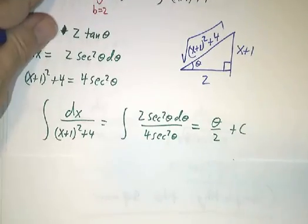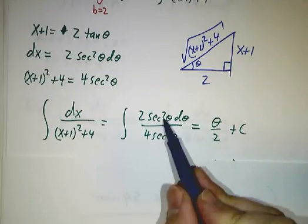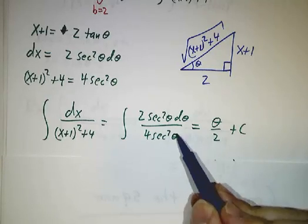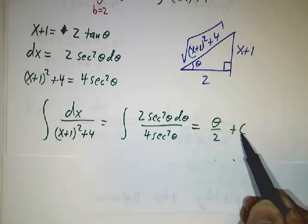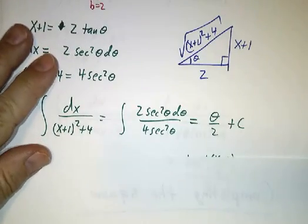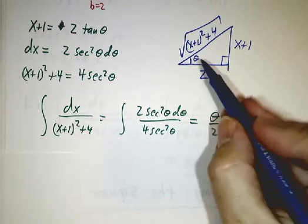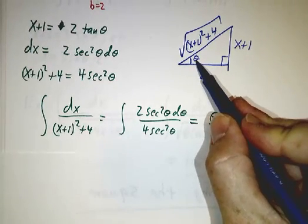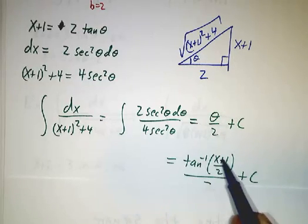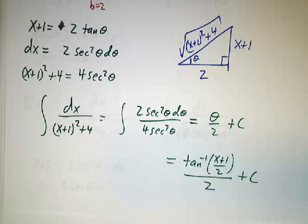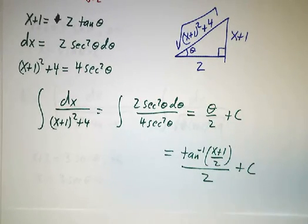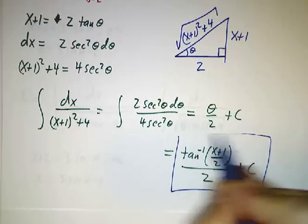And that's our angle theta. And then we do everything exactly as before. We rewrite everything in terms of theta. And in this case, we wind up with the integral of d theta over 2, so that's just theta over 2 plus a constant. And then we have to rewrite everything back in terms of x, and we say theta is the angle whose tangent is x plus 1 over 2. So theta is the arc tangent of x plus 1 over 2. The answer was theta over 2 plus a constant. And there's our integral.